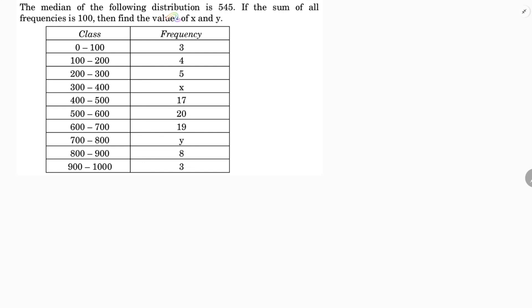The median of the following distribution is 545. If the sum of all the frequencies is 100, then find the values of x and y. This problem is based on median, so first I'll find the cumulative frequency.